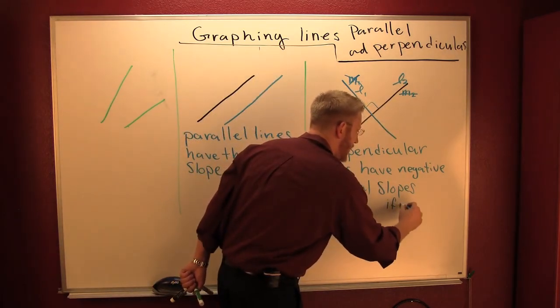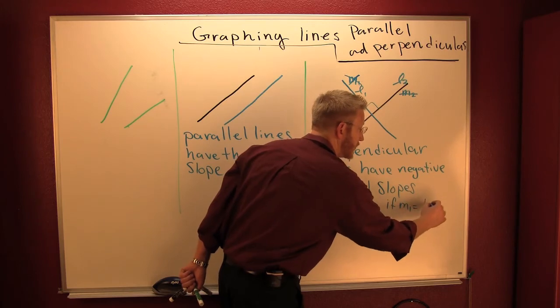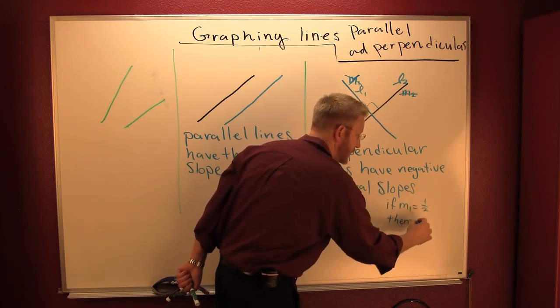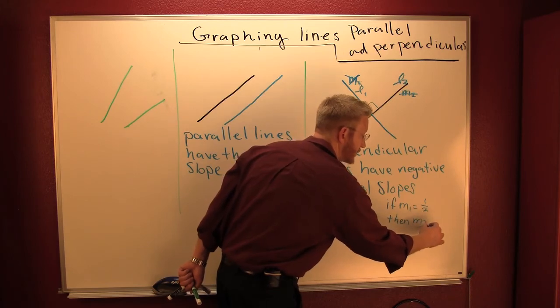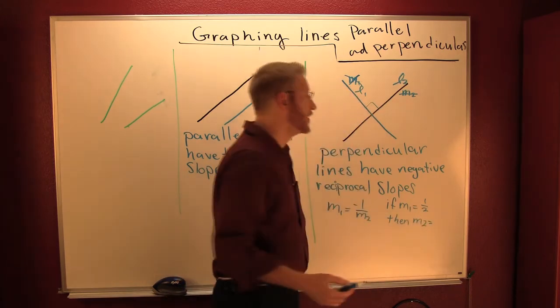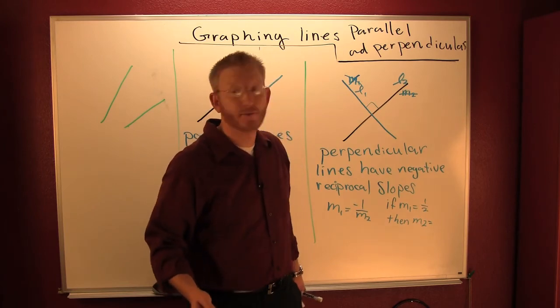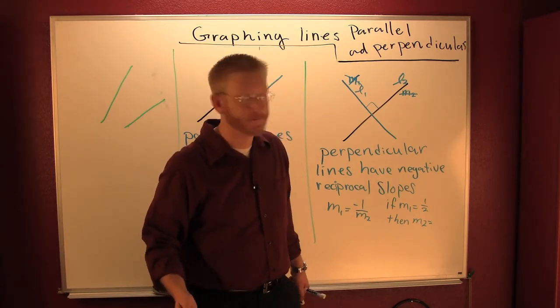If M1 is 1 half, then M2 is equal to... Now what's the reciprocal of 1 half? The reciprocal is the number that will multiply by the number, the product is 1.